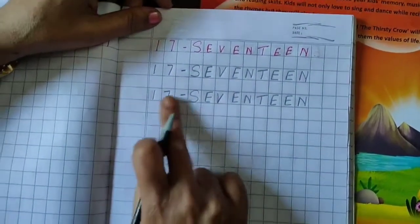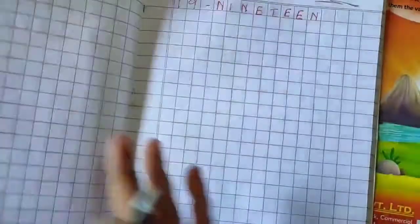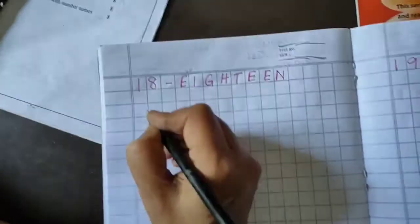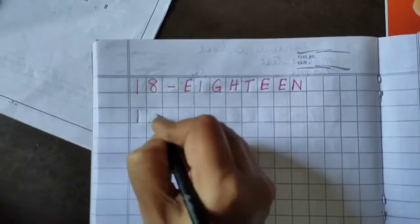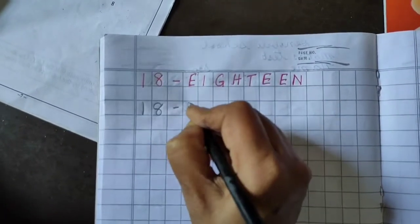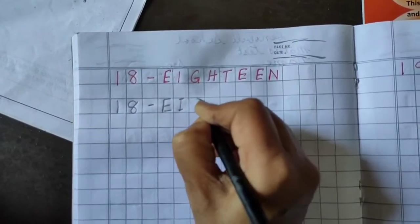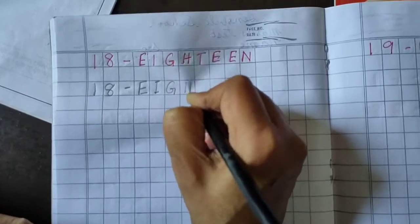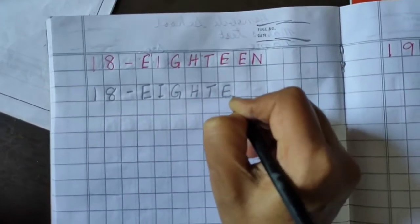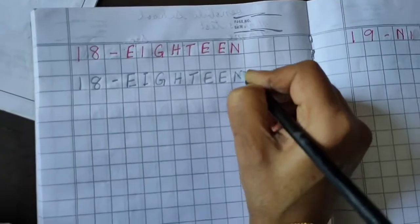Now take out, turn your page, start writing. 18: 1, 8. Okay. E, I, G, H, T, E, E, N. 18.